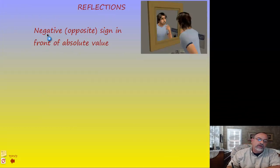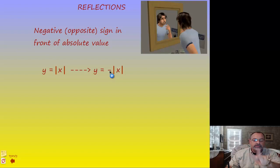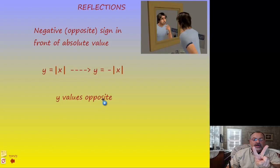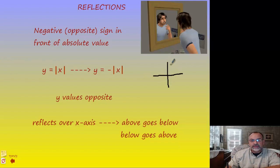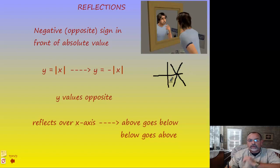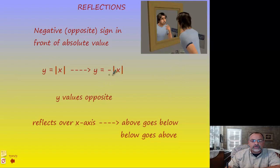The reflection, as mentioned, is a negative sign in front of the absolute value. It turns the graph upside down — more precisely, it makes all y-values the opposite of what they would be without the negative sign. This is called reflecting over the x-axis. The x-axis acts like a mirror, and all points are reflected over it.